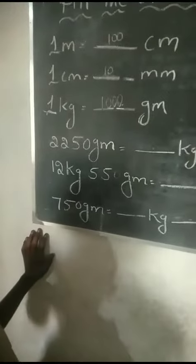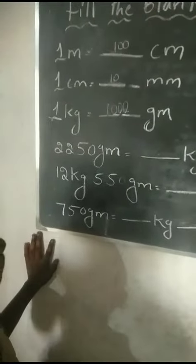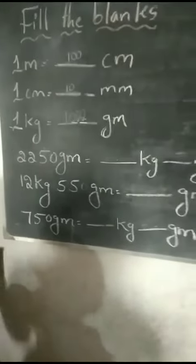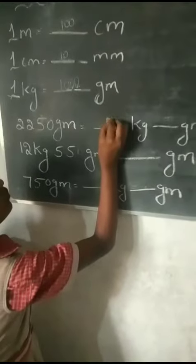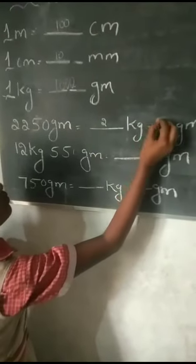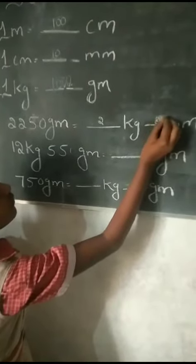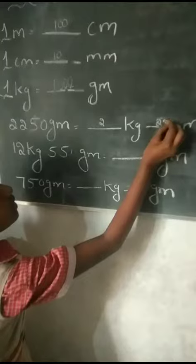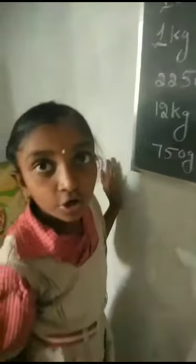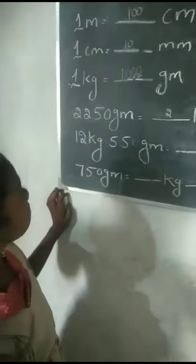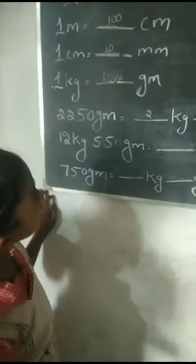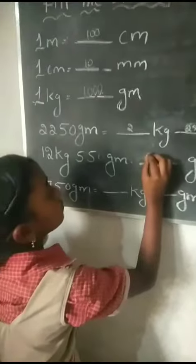Now, you can write 2250 grams in kilograms and grams. Write down. Very good, next. 12 kg 550 grams — you have to write in grams.